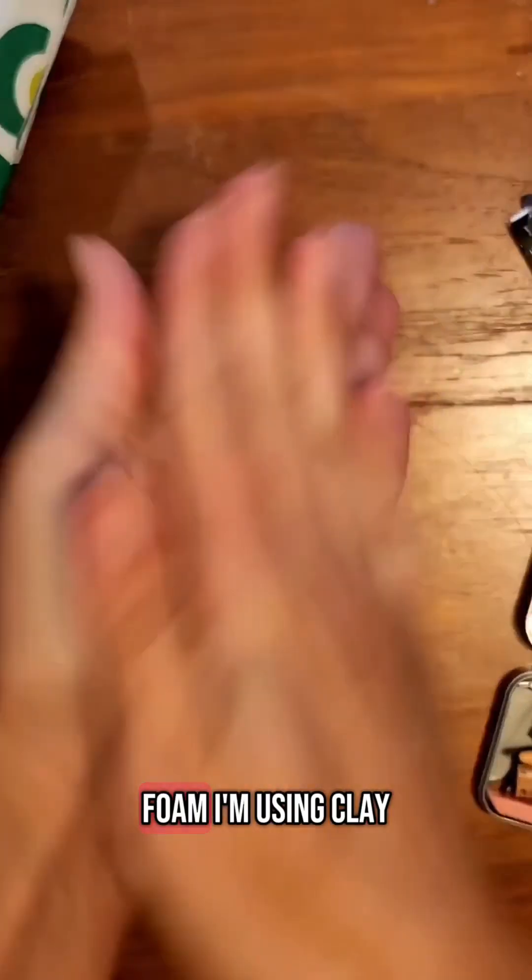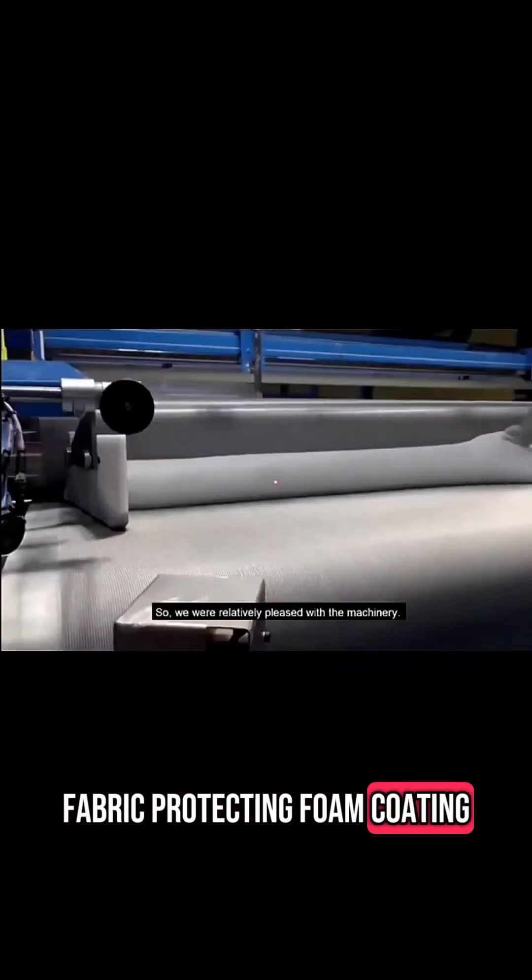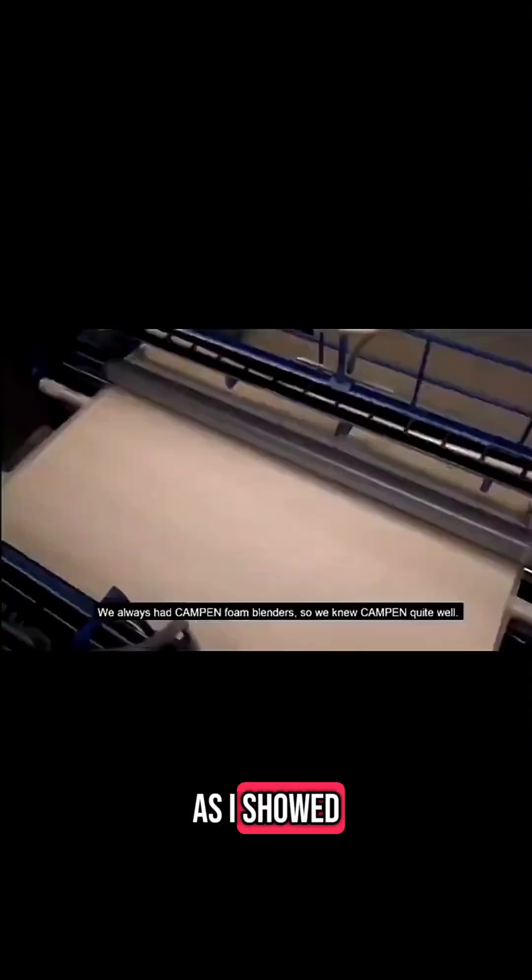Here's my pretend foam. I'm using clay, but at the time we were looking at a fabric protecting foam coating being applied to the surface of carpet, and this foam was being rolled out by a mechanical cylinder as I showed in the other video.